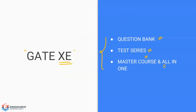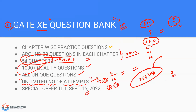That's all about GATE XC preparation — the test series, question bank, and courses from Endurance Engineering Academy. If you're interested in any of the courses, check the description and register. As mentioned, the question bank is being launched for the first time, and there is a special offer available until September 15th. If you're interested in the question bank, register before September 15th. Thank you.